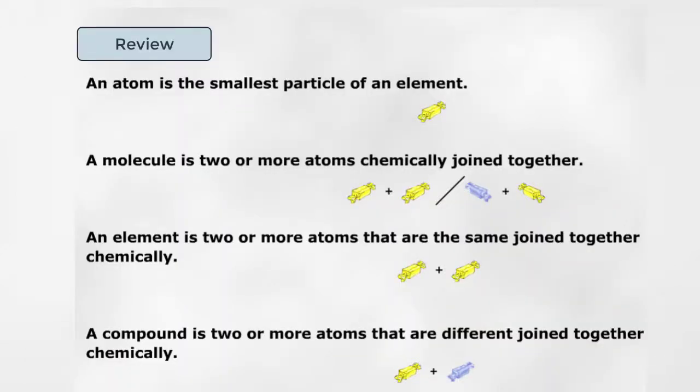An atom is the smallest particle of an element. A molecule is two or more atoms chemically joined together. An element is two or more atoms that are the same joined together chemically. A compound is two or more atoms that are different joined together chemically.